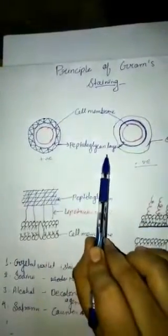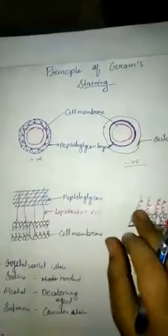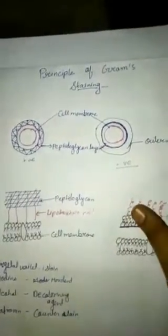Here I have drawn two diagrams. This one is Gram positive bacteria and this one is Gram negative bacteria. The Gram positive bacteria have thick peptidoglycan layer and in Gram negative there is thin peptidoglycan layer.